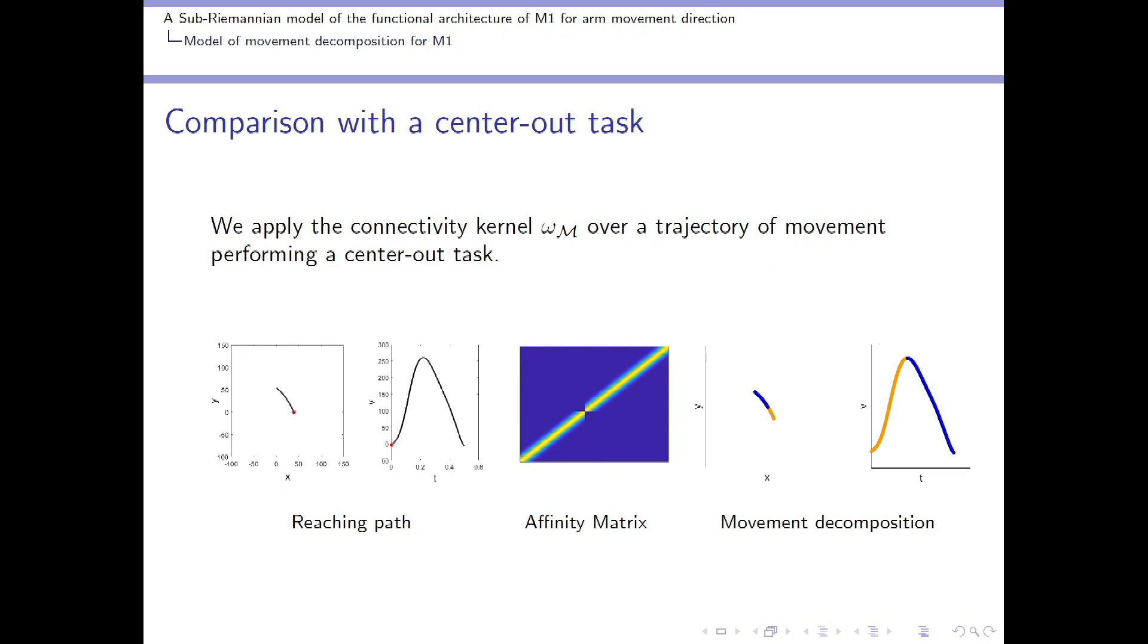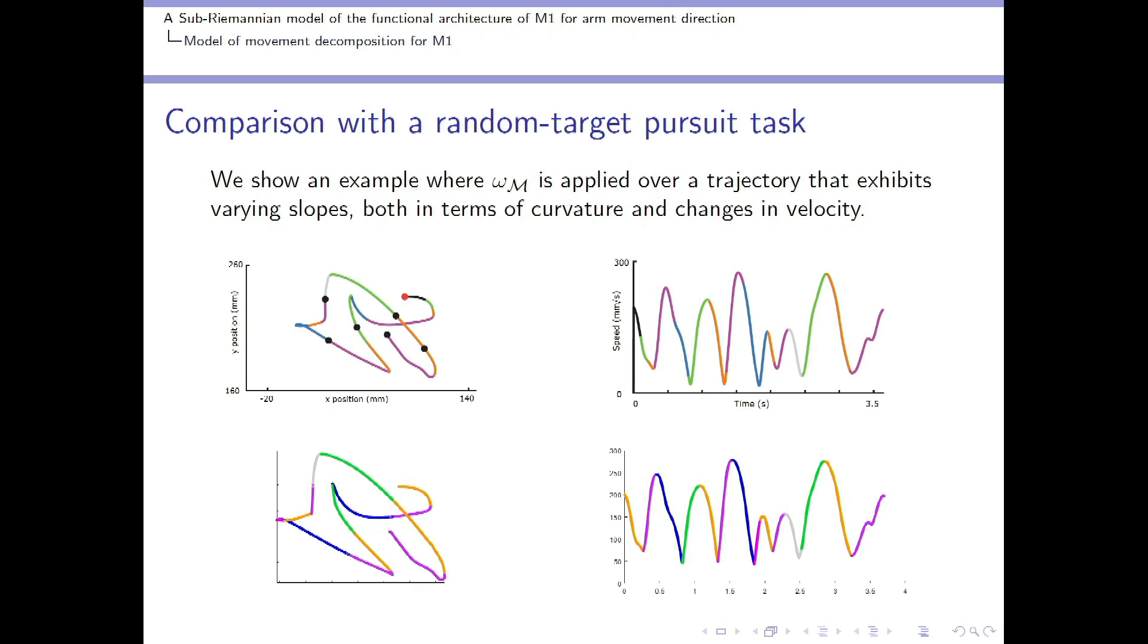But here, there are no changes in the curvature. Therefore, we provided another example where our connectivity kernel is applied over a trajectory that exhibits varying slopes, both in terms of curvature and in changes in velocity. In the first row, there are taken curves from the neural data, where on the left, always the hand path, and on the right, its speed profile. Here, there are many colors. If we focus, for example, on the violet one, the violet color means that there exists a group of neurons that is active while performing those acceleration phases and that are directed over the second quadrant.